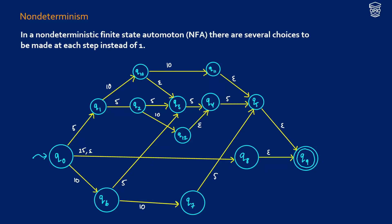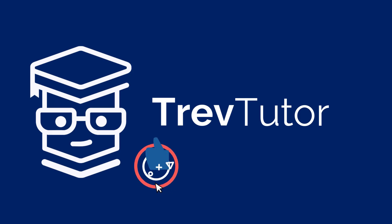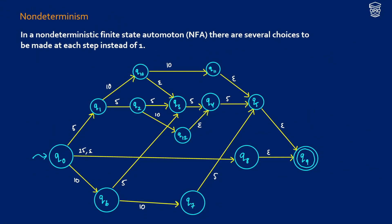Non-deterministic finite state automata are a little bit different than deterministic ones. With deterministic ones you only have one straightforward path through all of your nodes or states. With a non-deterministic finite state automaton you can have choices — for example, there might be a state where 'a' takes you to q1 and to q2. What you're seeing here is an example of an NFA.